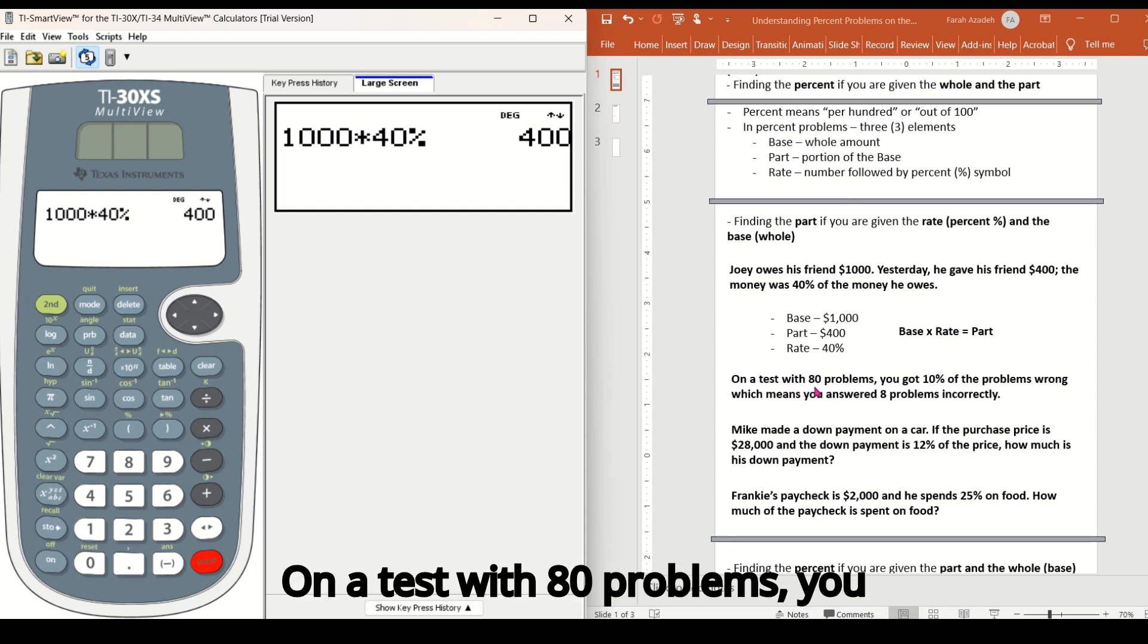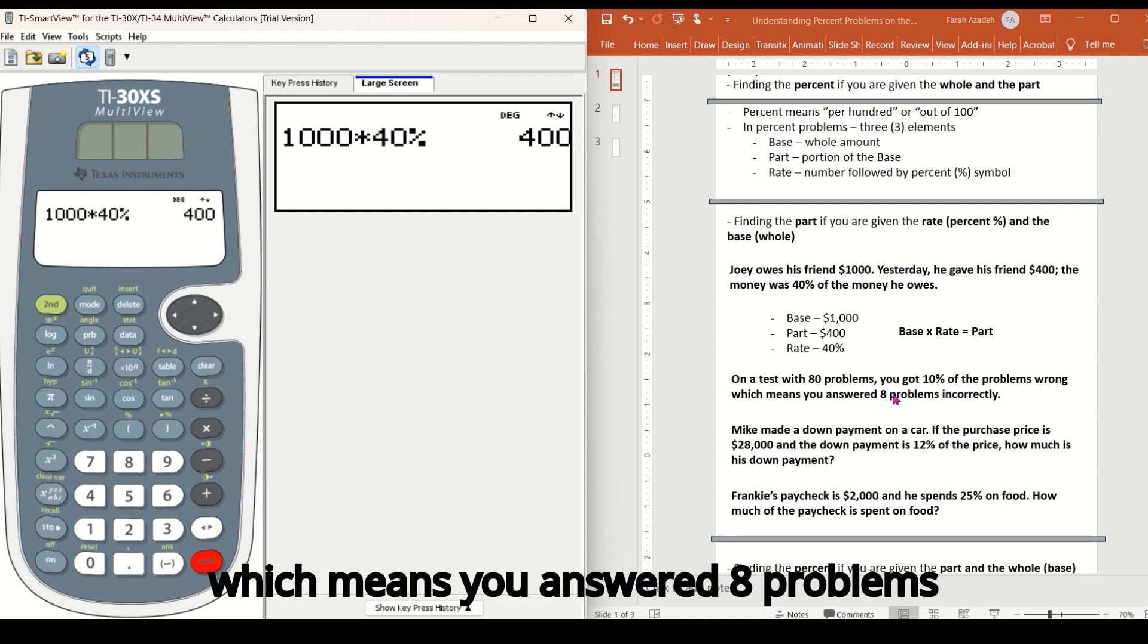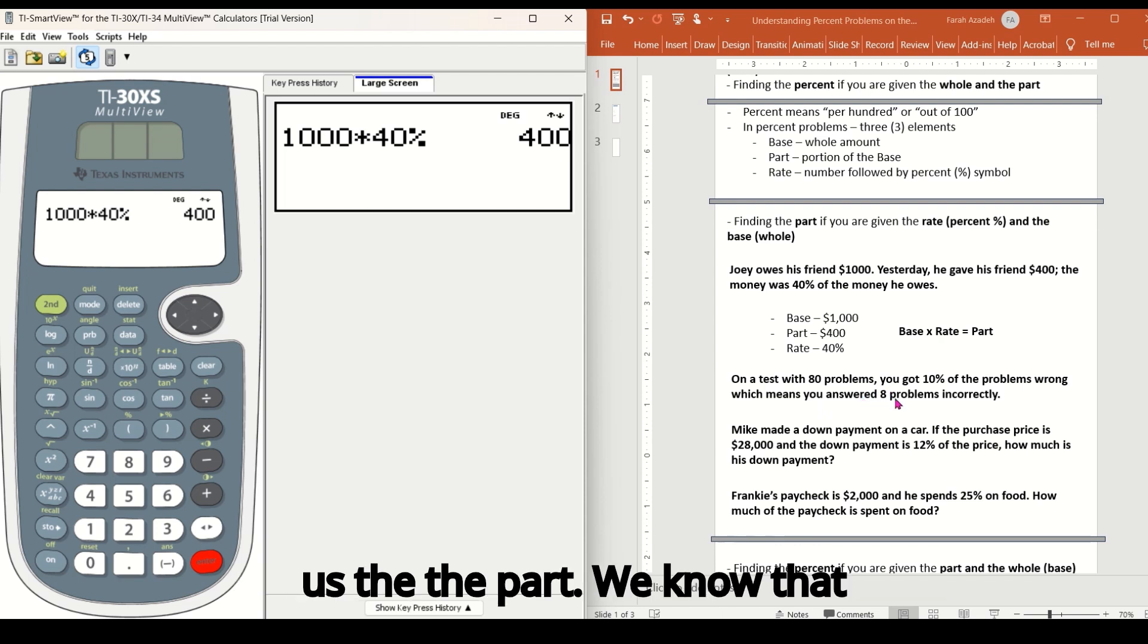On a test with 80 problems, you got 10% of the problems wrong, which means you answered eight problems incorrectly. So let's go back up here. Obviously they gave us the part. We know that that's our answer, but let's check it out and really quickly do this on the calculator. Let's check their work.